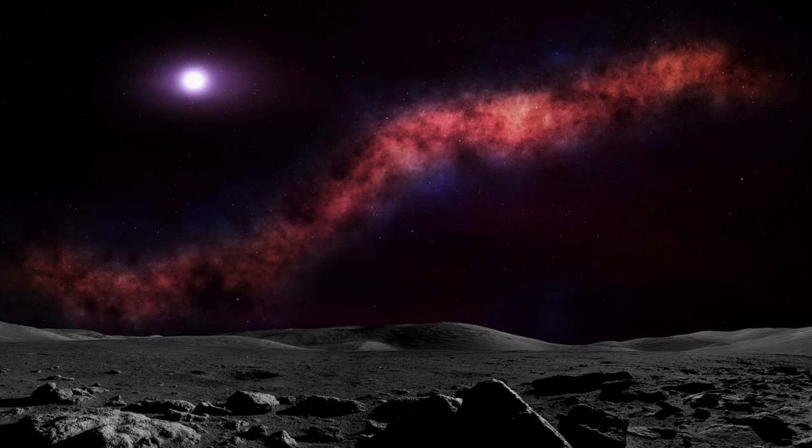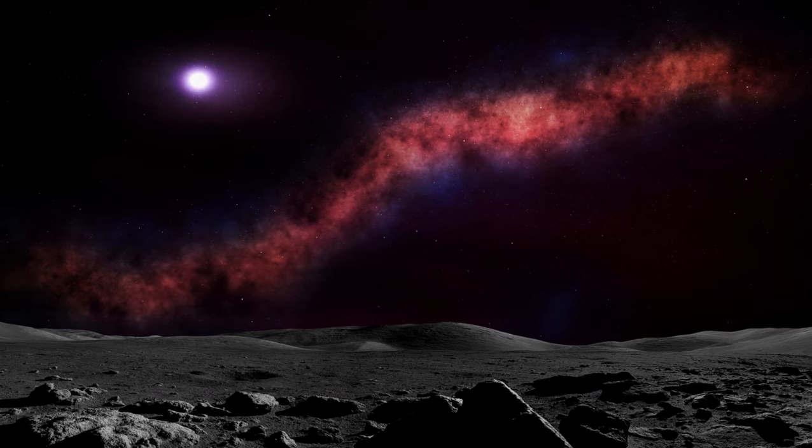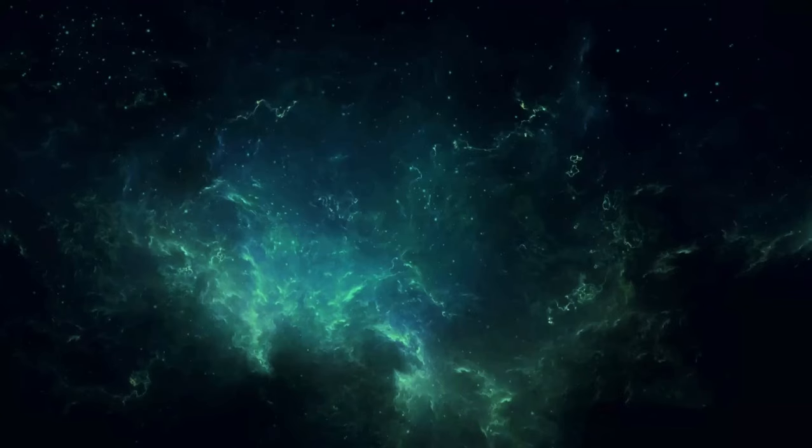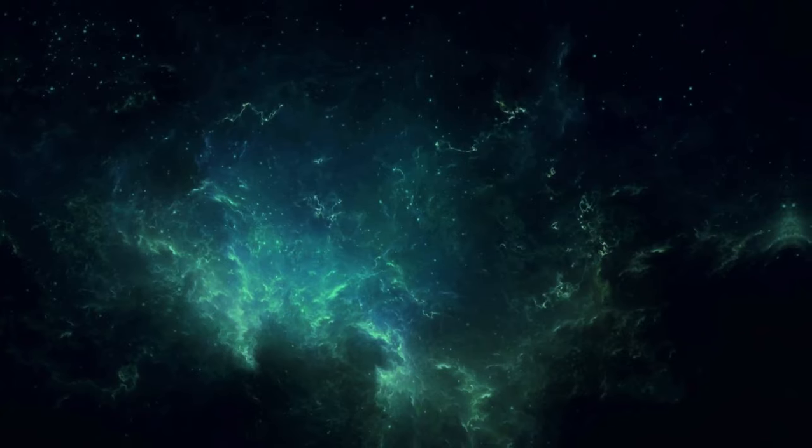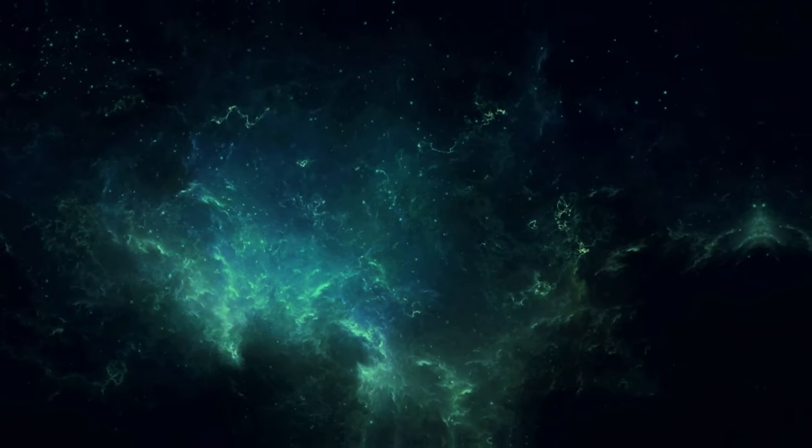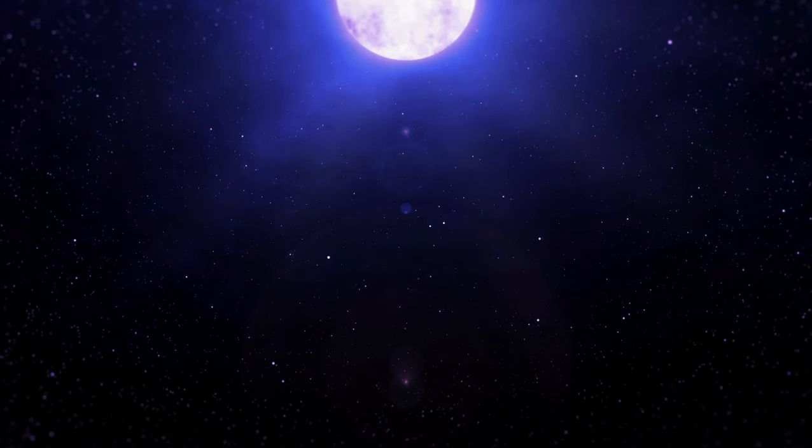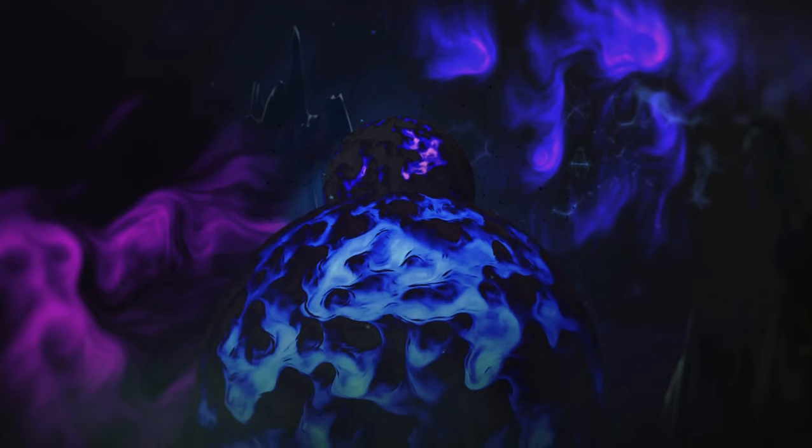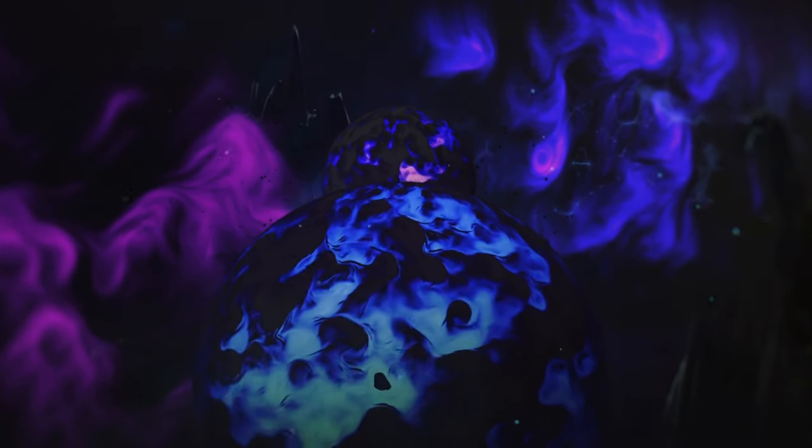Intense heat and radiation from these encounters may have stripped away Oumuamua's volatile components, leaving behind a rocky or metallic body without the usual cometary features. This gave room for the possibility that Oumuamua is an interstellar asteroid. If Oumuamua were an asteroid, the lack of visible emission could be explained, as asteroids typically do not exhibit the same outgassing behavior as comets.